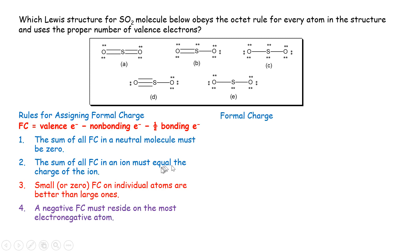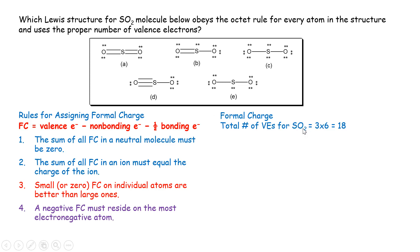Now let's look at this specific problem. For the SO₂ molecule, the total number of valence electrons: sulfur has six valence electrons, and each of the two oxygens also has six, giving a total of 18 valence electrons.